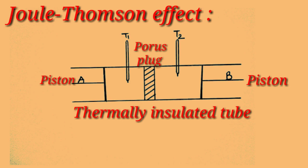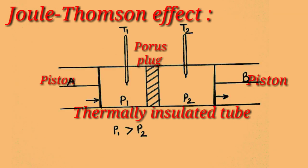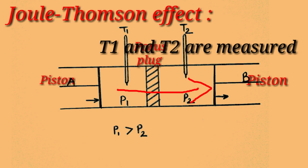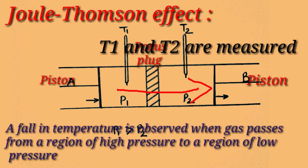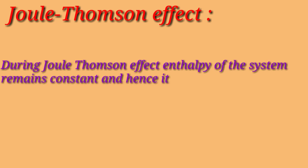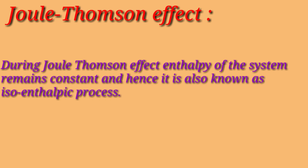The real gas is kept between pistons A and B at two different pressures P1 and P2, where P1 is greater than P2. The gas is allowed to expand adiabatically from high pressure to low pressure through the porous plug. Temperatures T1 and T2 on either side of the porous plug are measured, and a fall in temperature is observed. During the Joule-Thomson effect, the enthalpy of the system remains constant, hence it is also known as an isoenthalpic process.